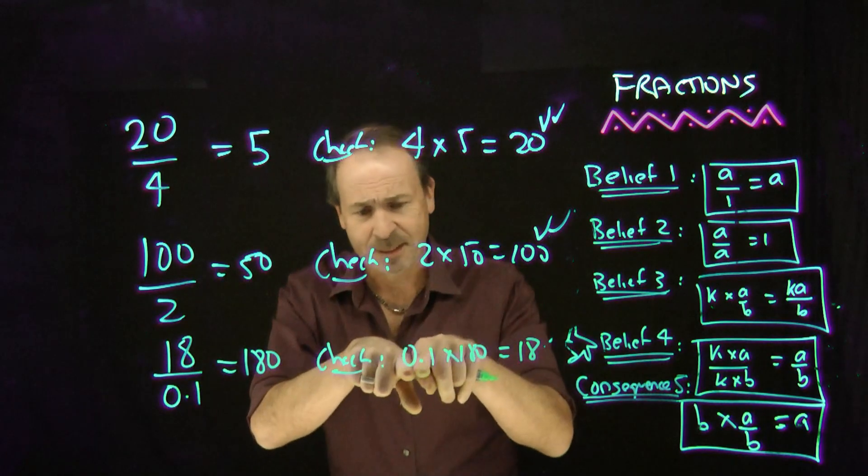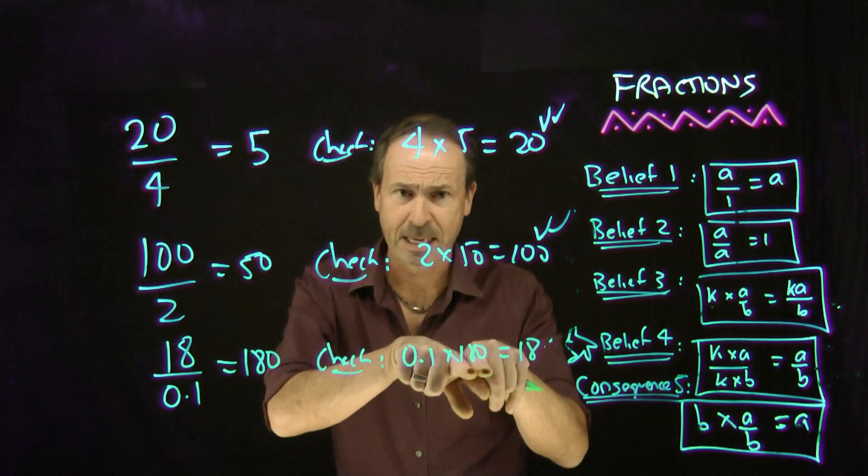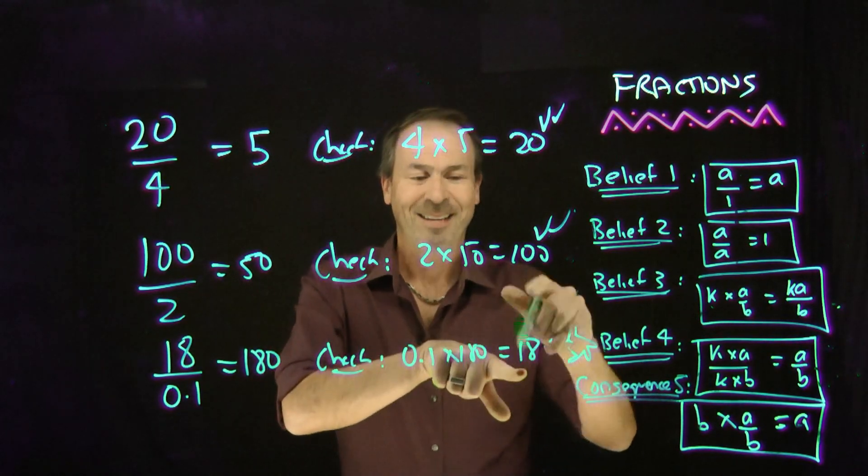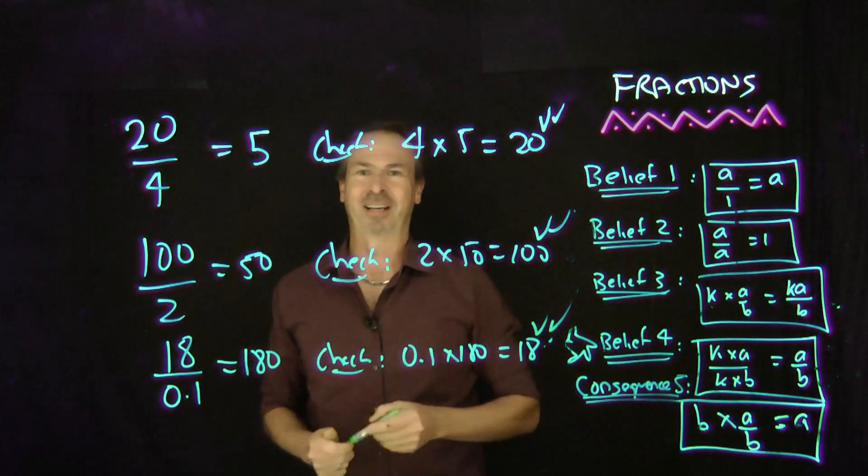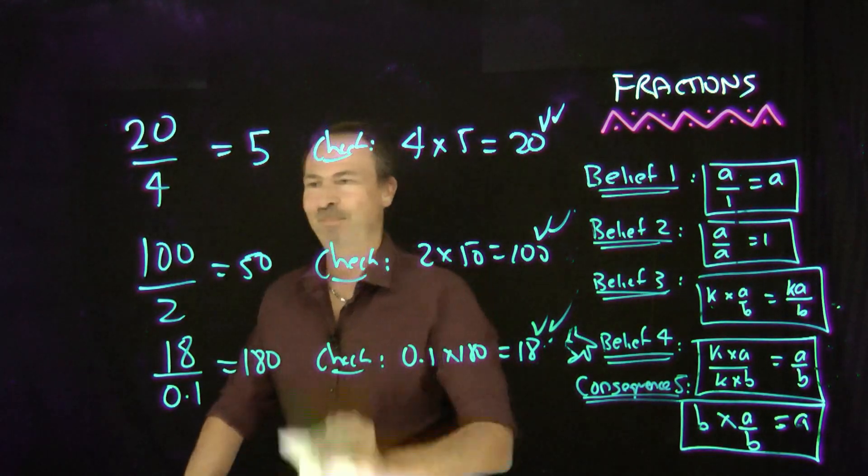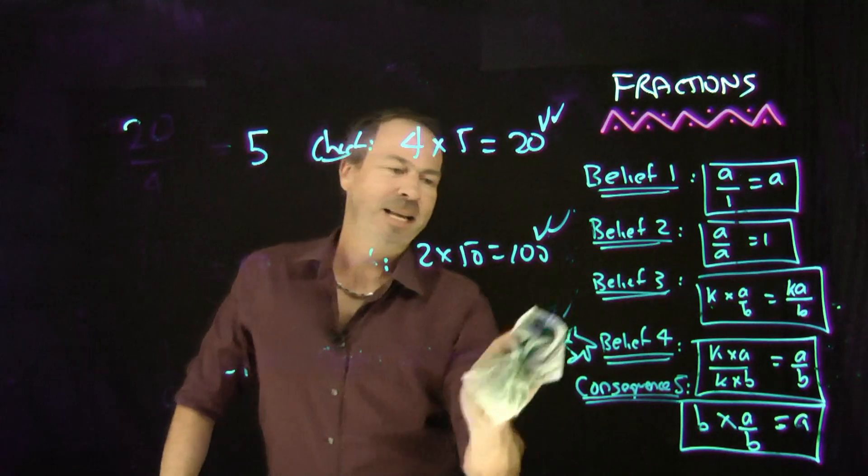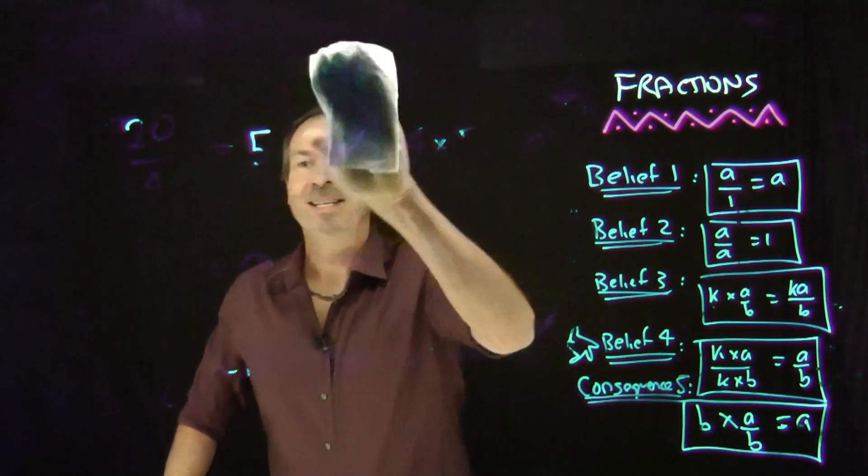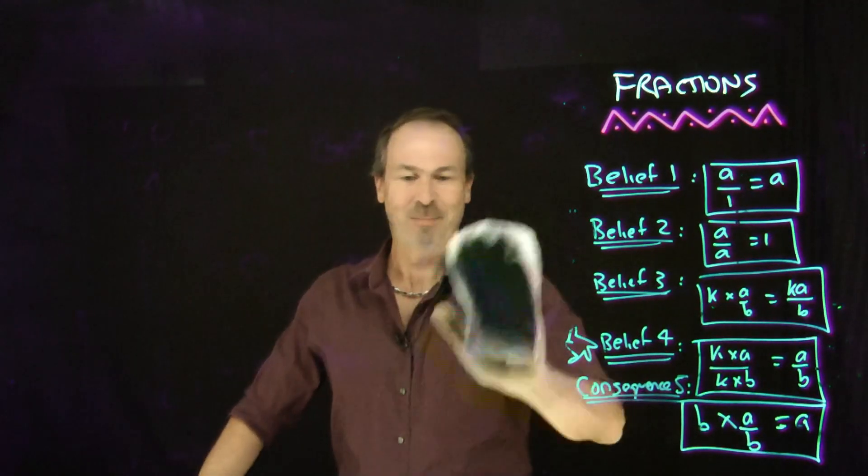Now, I know I haven't done decimals formally, but this is 1 tenth times 180. So 1 tenth of 180 is indeed 18. It passes my check. Lovely. Okay, so let's now get wild. Let's now start dividing by 0 and see what fun comes of that.